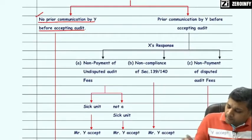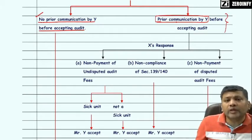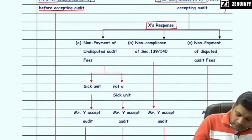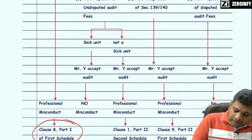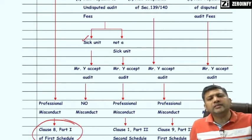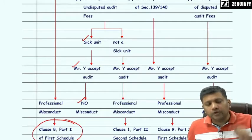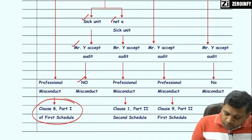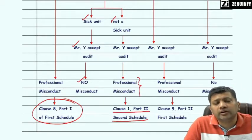Appointment of auditor in case of non-payment of undisputed fees of predecessor auditor is not allowed, except in case of SIC units. If the predecessor auditor replies that undisputed audit fees have not been paid: if the entity is a SIC unit, the incoming auditor can accept the audit and no misconduct arises. However, if the incoming auditor accepts the audit and the entity is not a SIC unit, it will be considered as professional misconduct under Clause 1, Part 2 of Second Schedule — being a contravention of the Council General Guidelines.